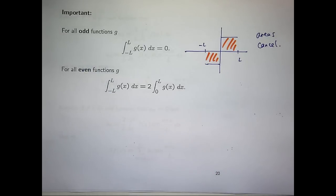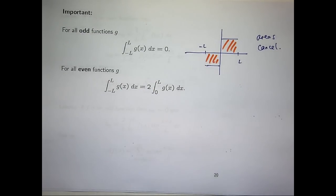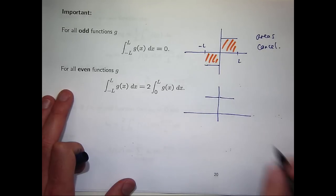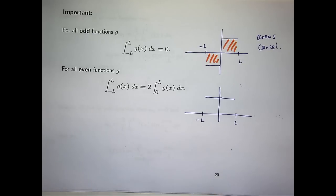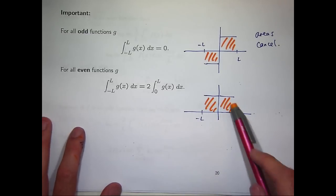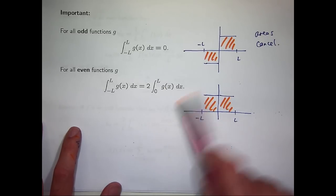For even functions, the integral from minus L to L is just twice the integral from zero to L. Zero in an integral sign is usually easy to deal with, so sometimes this form will be much simpler. If you draw an even function, the area from 0 to L is the same as the area from −L to 0, so integrating from zero to L and multiplying by two equals integrating over the entire interval.